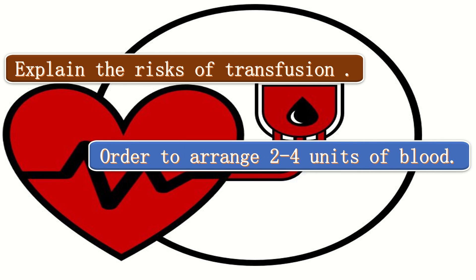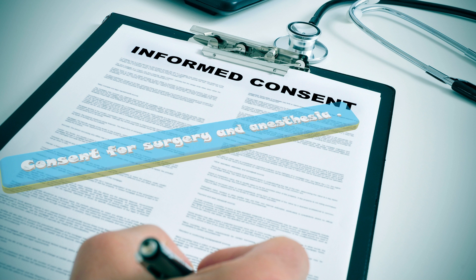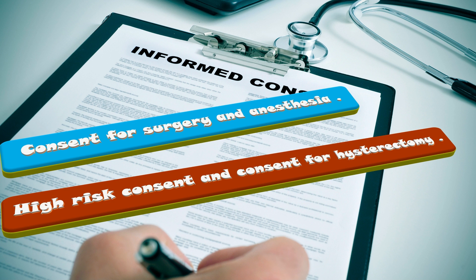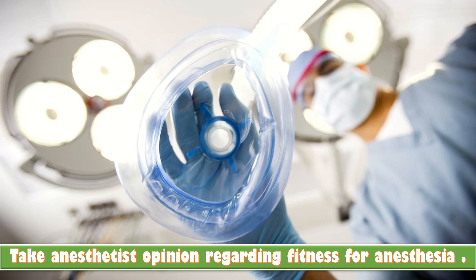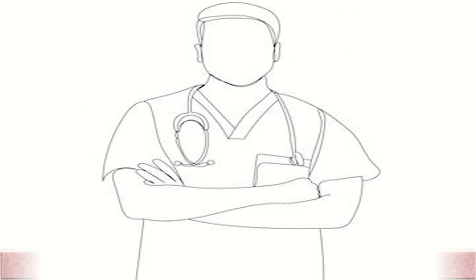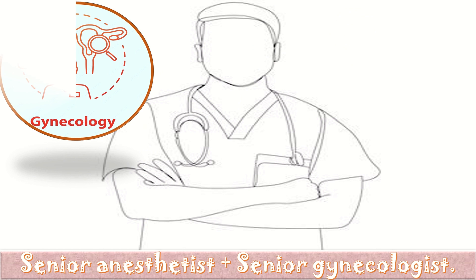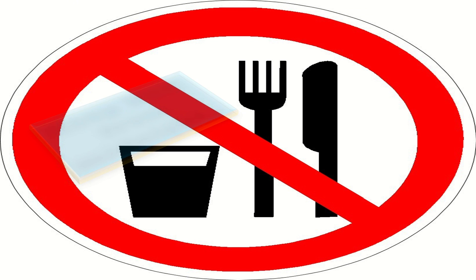Inform the blood bank and haematology department in case more blood is required. Take well-informed consent for surgery and anaesthesia, and also take high-risk consent and consent for hysterectomy in case of excessive uncontrollable bleeding. Take the anaesthetist's opinion regarding fitness for anaesthesia. A senior anaesthetist will assess fitness and a senior gynaecologist must perform the procedure.